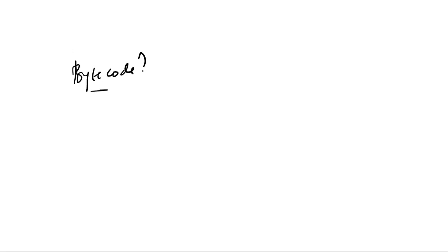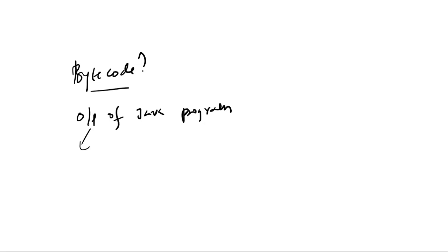Hello friends, welcome to this video. In this video we'll discuss about bytecode. So what is bytecode? Bytecode is nothing but the output of our Java program — it's not the final output, I will say, because the final output is something which you will see on the console. This is the intermediate output of your Java program.